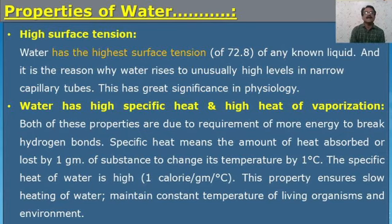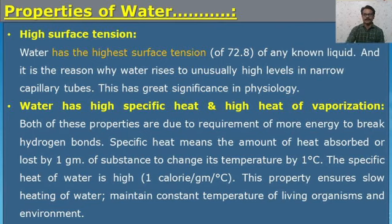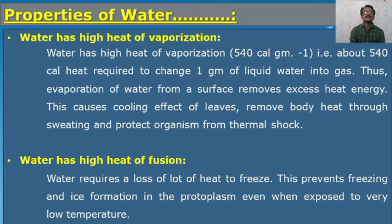Water has high specific heat and high heat of vaporization. The high specific heat ensures slow heating of water and maintains the constant temperature of living organisms and the atmosphere. The high heat of vaporization — 540 calories per gram — causes a cooling effect on leaves and removes body heat through sweating, protecting organisms from thermal shock.